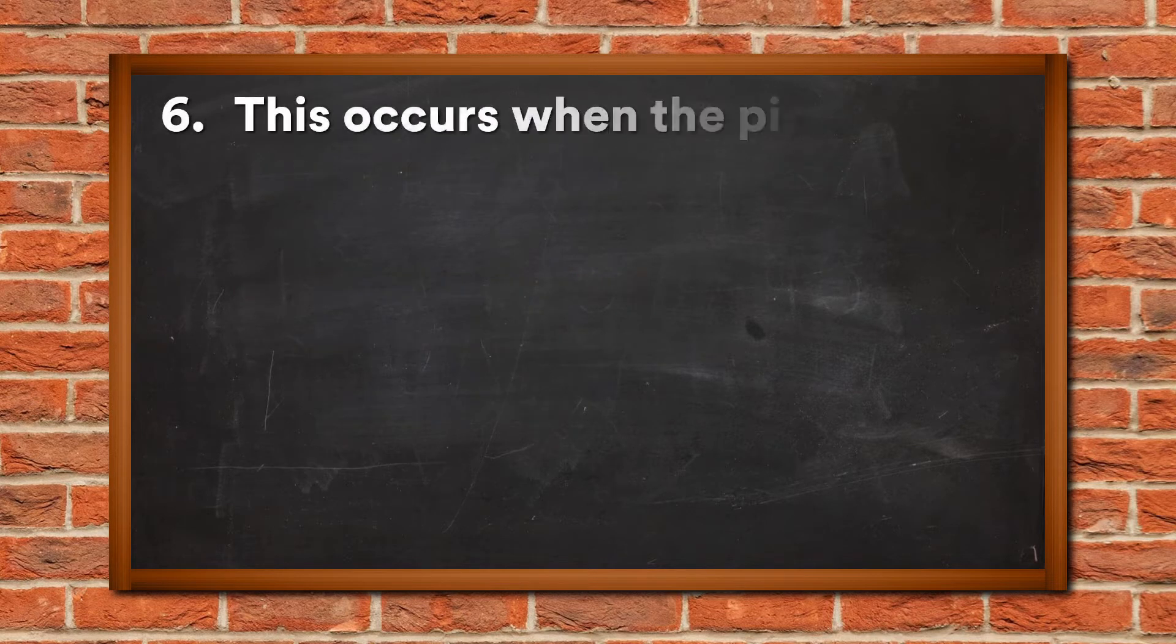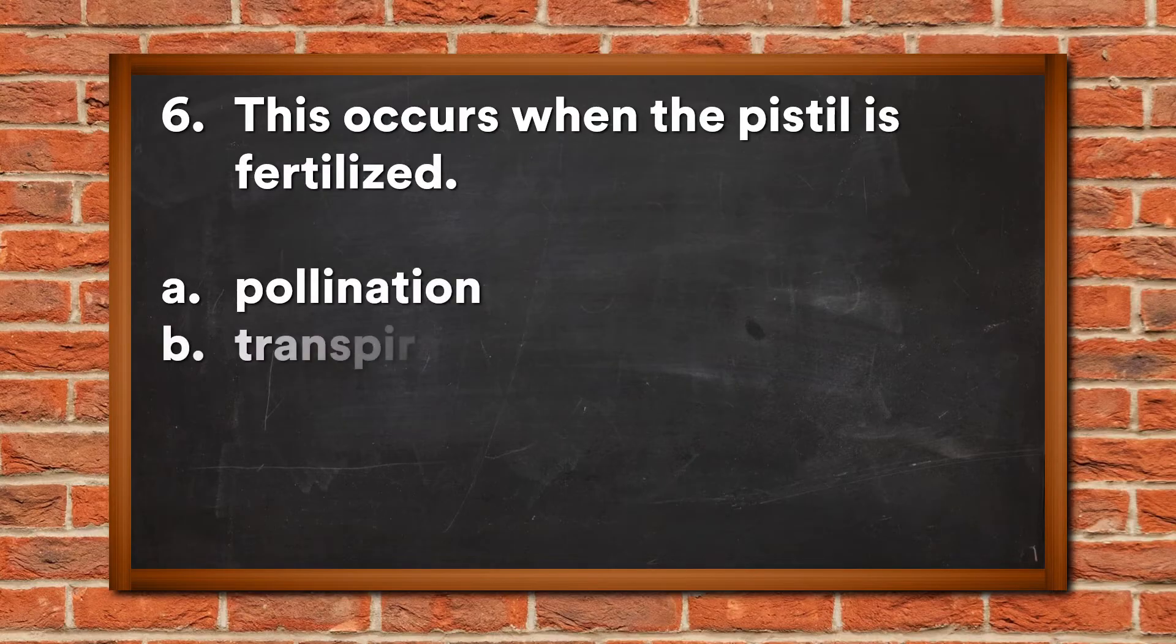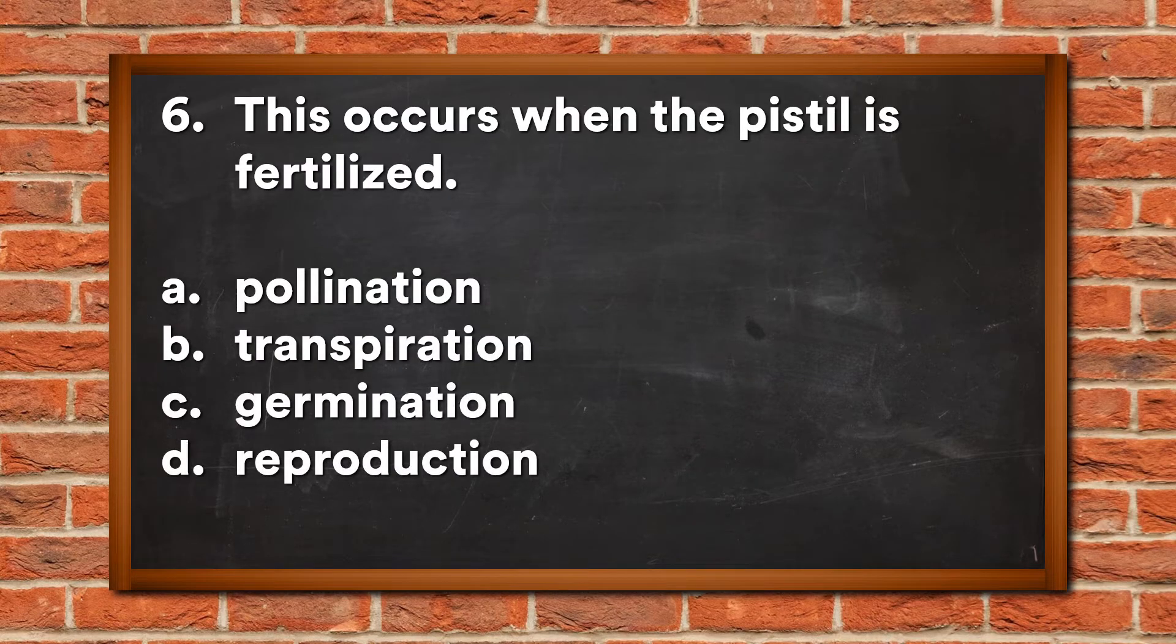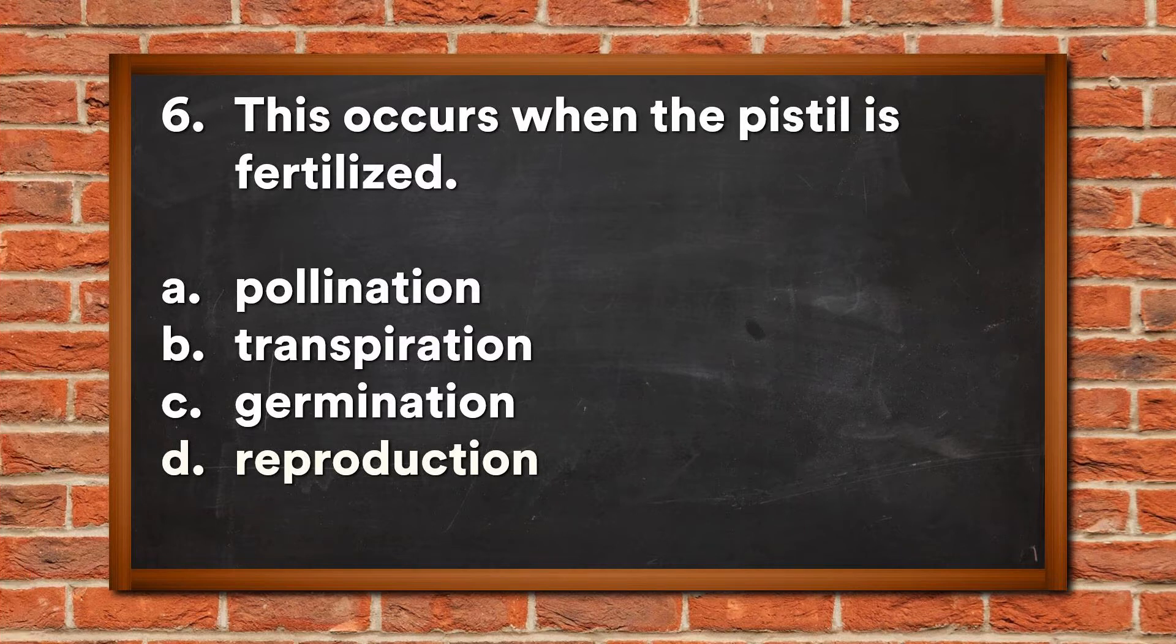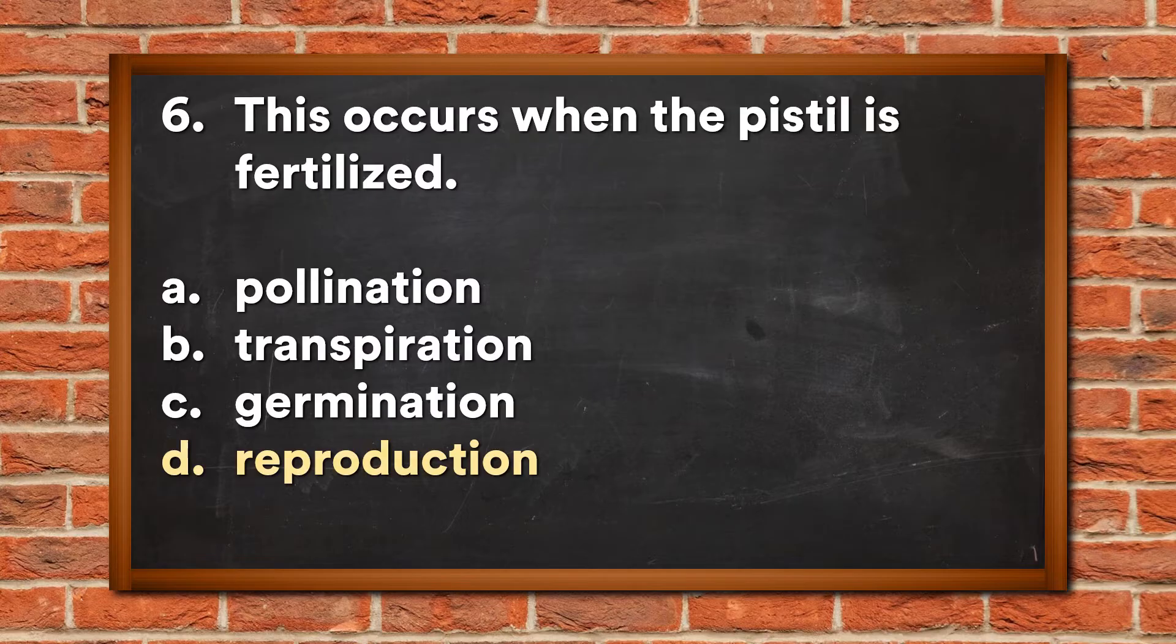Question 6: This occurs when the pistil is fertilized. A. Pollination, B. Transpiration, C. Germination, D. Reproduction. The answer is D, Reproduction.